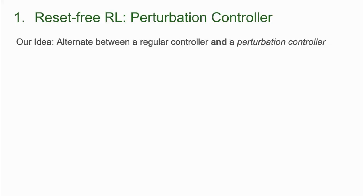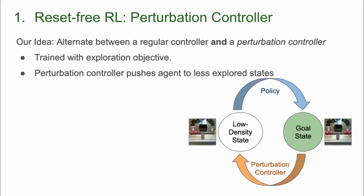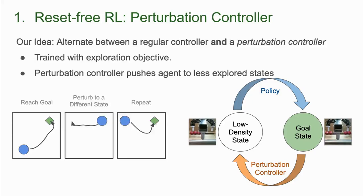In order to avoid getting stuck at challenging states or the goal, we propose training a separate perturbation controller. The perturbation controller is trained with an exploration objective, which encourages it to visit less-seen states. During training, we replace the reset phase with an episode of our perturbation controller, and train both our policy and this new controller simultaneously. We can think of the perturbation controller as a learned substitute for a reset mechanism — it pushes the robot to a variety of rarely visited states, allowing the robot to attempt the task from a variety of configurations, and also serves as an exploration mechanism, preventing the robot from getting stuck for too long.